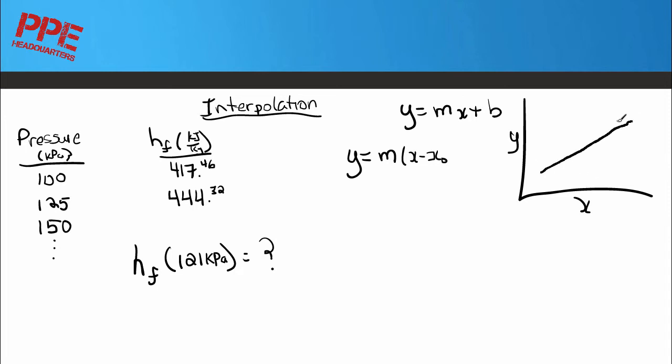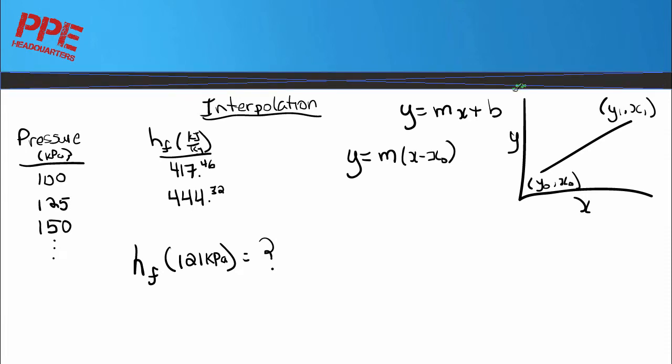So if we draw our line, this is y naught, x naught, y one, and x one. Then we will go plus y naught. So that's our formula. So we're basically mx plus b, we just need to know that we're y naught and x naught in there. Those are the only changes.